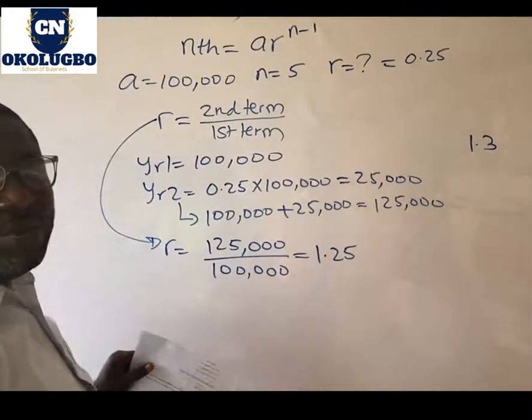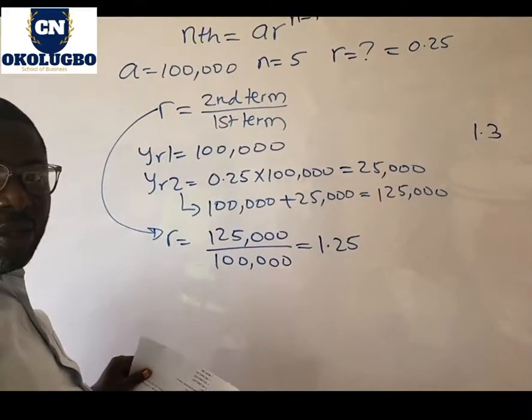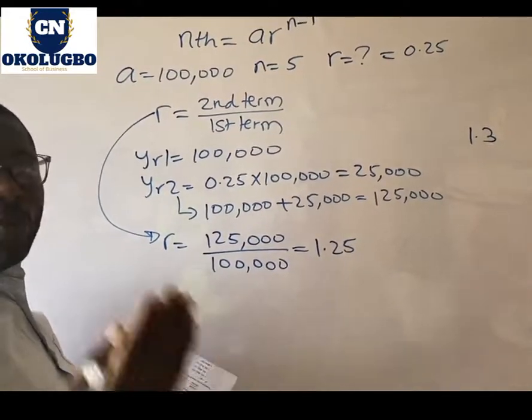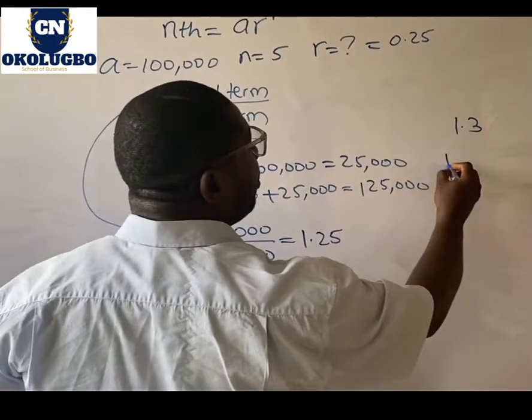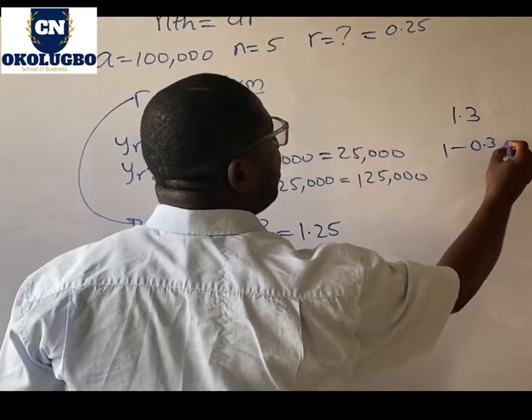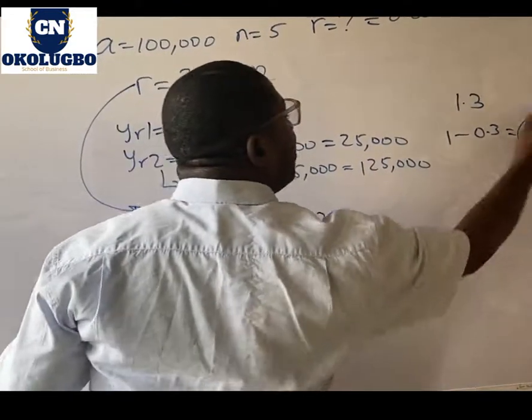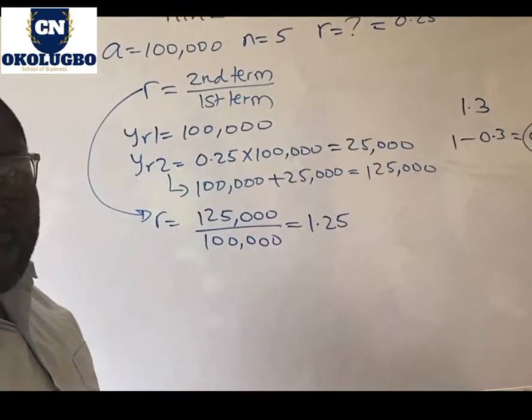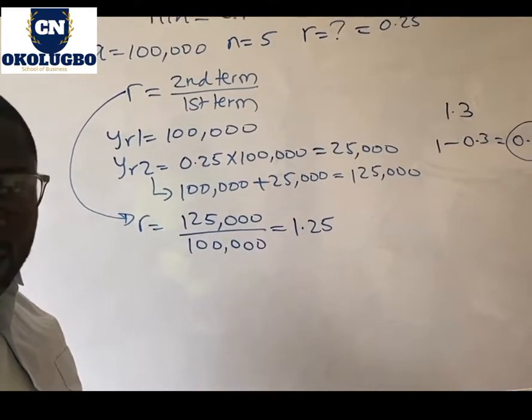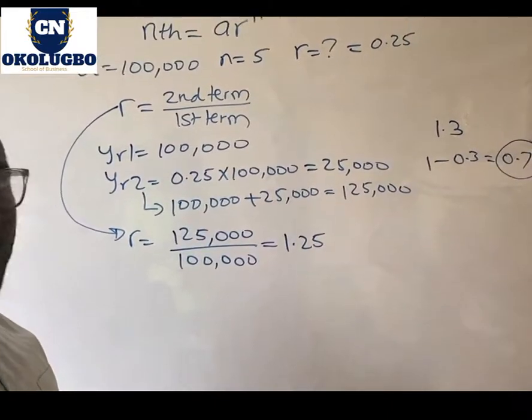But if you're told that the rate is reducing, you are going to deduct it from 1. So it becomes 1 minus 0.3, which will give us 0.7. So this will be the rate. We will deal with such kind of problem in the coming videos ahead.